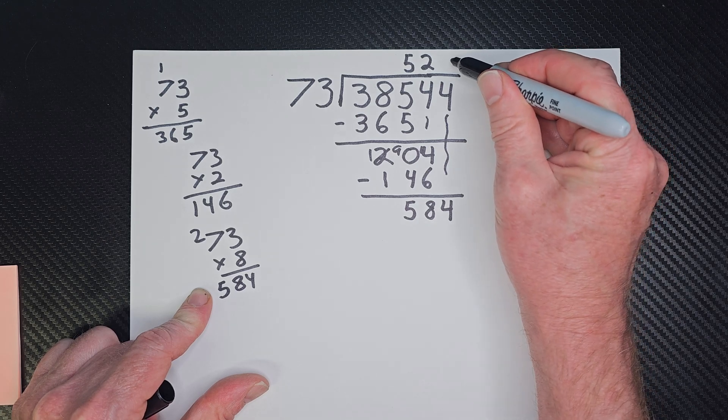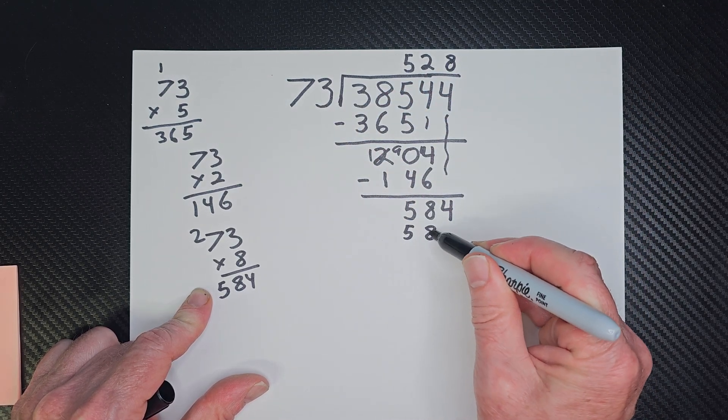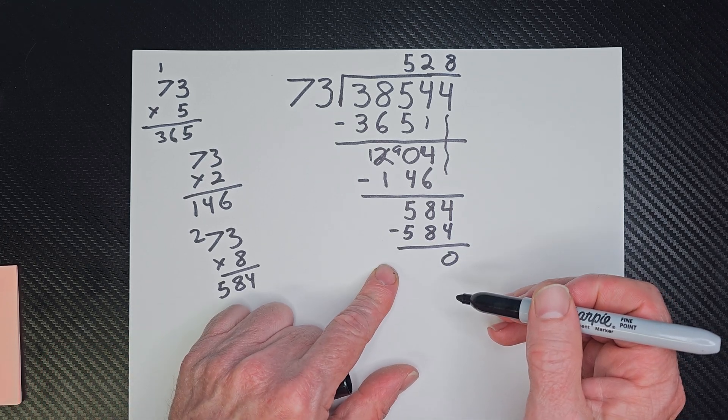So this would be 8 times 73 would be 584 with a 0 remainder.